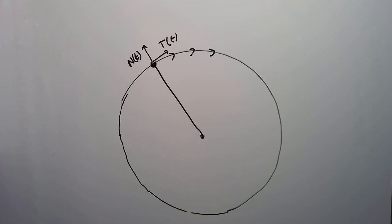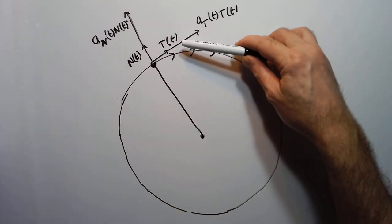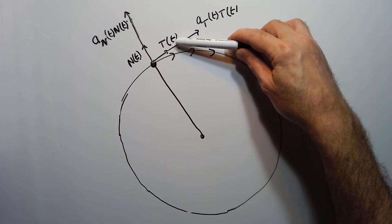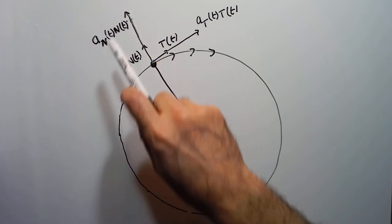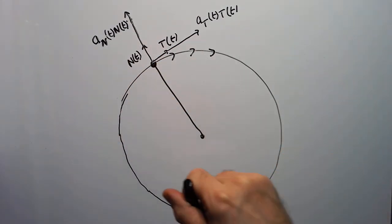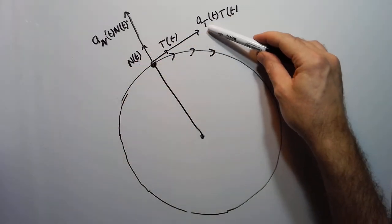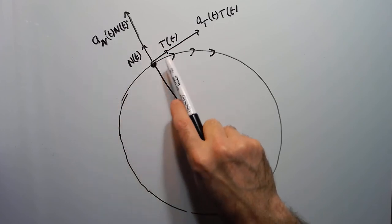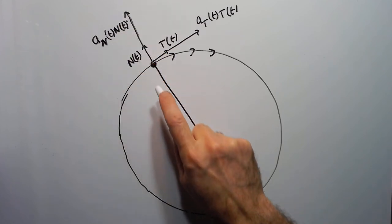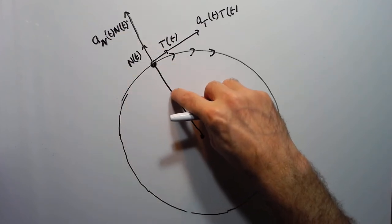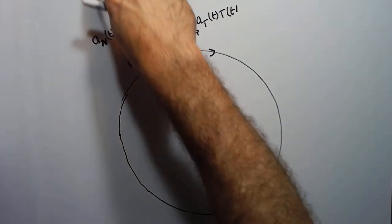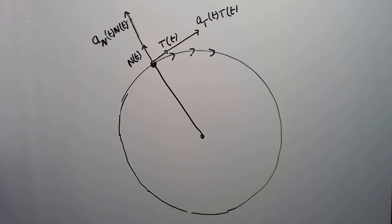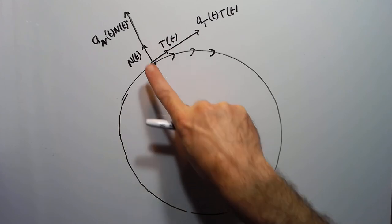The tangential acceleration is in the same direction as the unit tangent vector T, and the normal acceleration is along the N vector. If you swing the tennis ball at a constant speed, the tangential acceleration is zero. But you always have acceleration in the normal direction — as you go around in a circle, there's always a force pushing outward. If you cut the rope, the ball flies out, which is due to that normal acceleration.